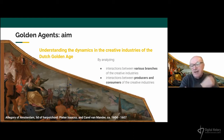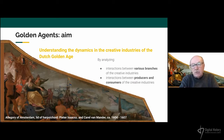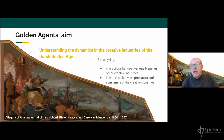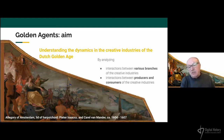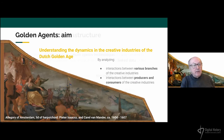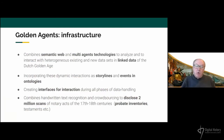The goal is to get a better understanding of the dynamics and historical processes in the creative industries of the Dutch Golden Age. We are particularly interested in the overlap between the various branches, so not just painting but also literature, theatre, and all forms of interaction. We are very much interested in the producers and consumers of those creative industries — not just the elite culture of Amsterdam in the 17th century, but all layers of society.